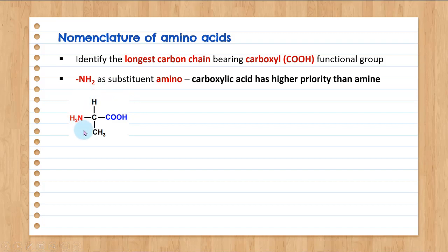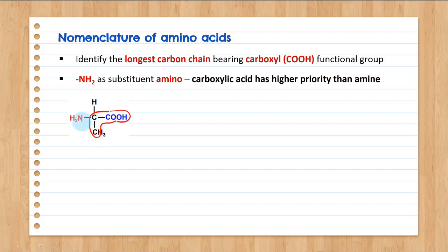For the first structure, COOH will be your first carbon, and then we figure out the longest carbon chain. In this case, we have three carbons in the main parent chain and NH2 as the substituent amino. So the name is 2-aminopropanoic acid.